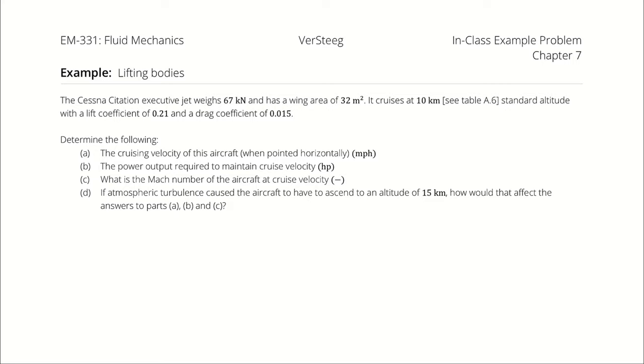The Cessna Citation executive jet weighs 67 kilonewtons and has a wing area of 32 square meters. It cruises at 10 kilometers standard altitude with a lift coefficient of 0.21 and a drag coefficient of 0.015.